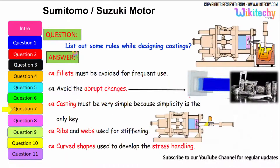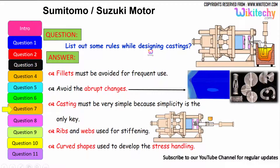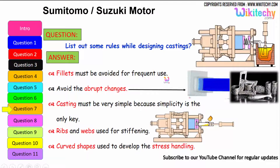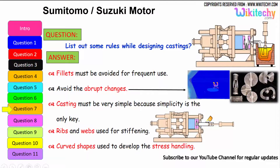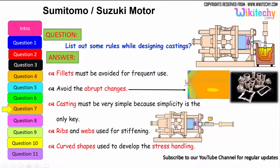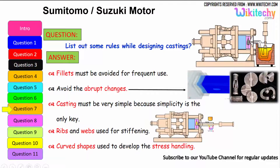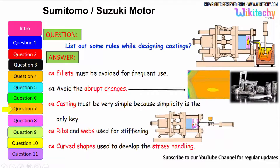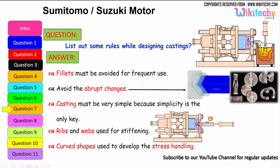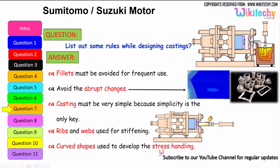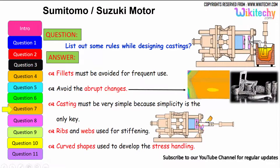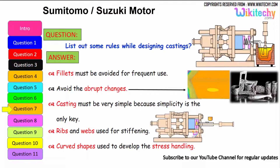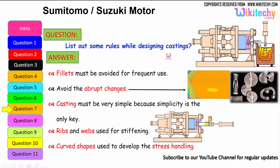Let us see some of the rules while designing castings. Fillets must be avoided for frequent use — that is the first one. Avoid abrupt changes in section. Casting must be very simple, because simplicity is the only key. Ribs and webs are used for stiffening — the casting should have ribs. Curved shapes are used to develop stress-handling capability and to avoid stress concentration.